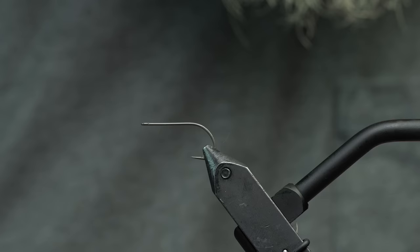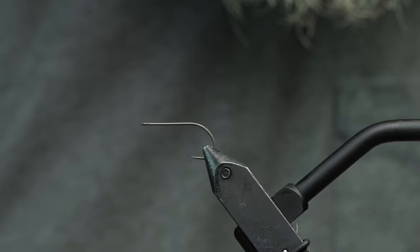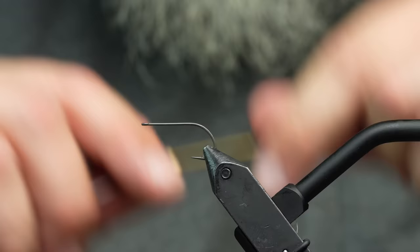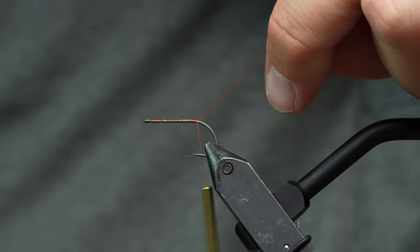On the back hook here we've got the Fulling Mill streamer stripper hook. It's a little bit wider gap hook. This one is a size 6. We're just gonna dress this up. Use your favorite thread. I usually use a 140 denier. Just something that matches up well with the color of your fly.